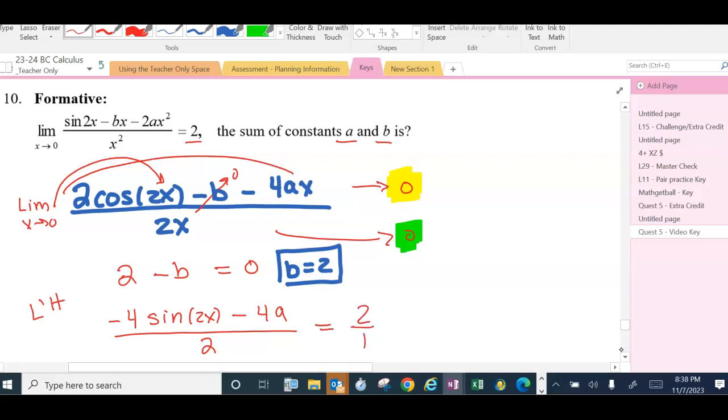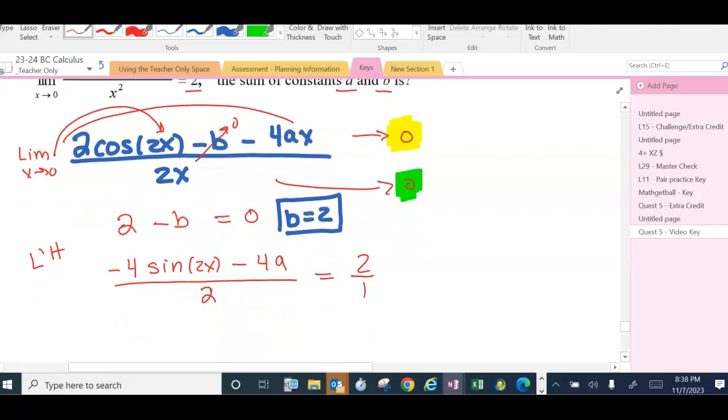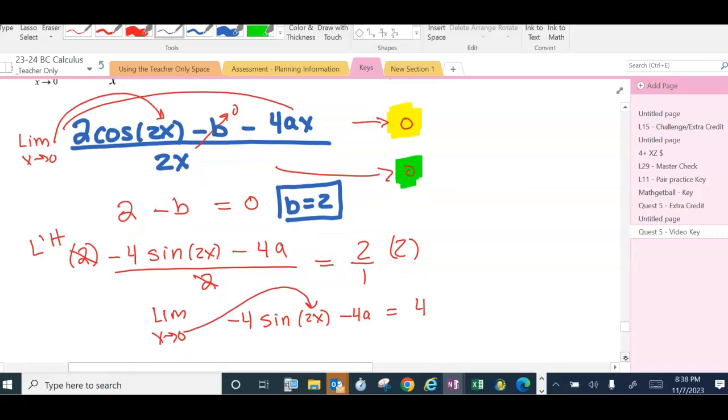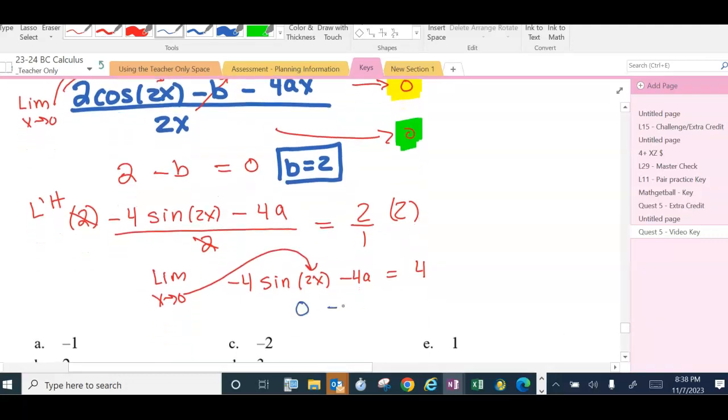I'm going to cross-multiply here to get this out of the denominator. So we have negative 4 sine of 2x minus 4a must equal 4. I'm still finding a limit as x approaches 0. When I do, this first term becomes 0. Minus 4a equals 4.